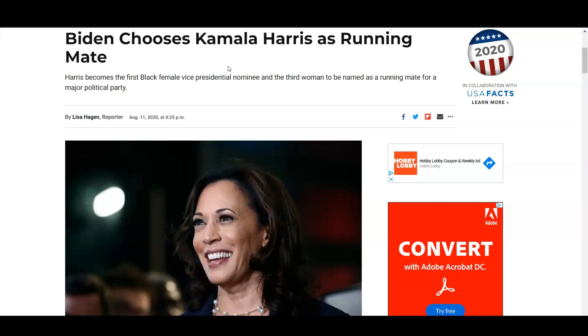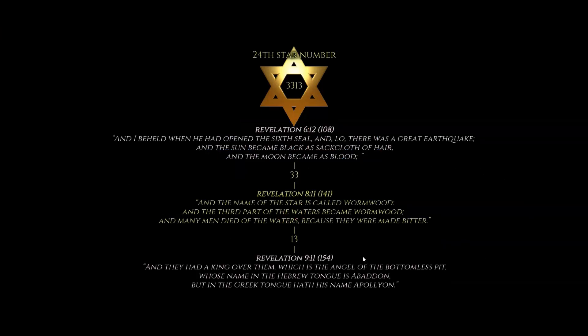Today I want to show you the Biden-Harris Democratic presidential nominee ritual for wormwood and World War. Joe Biden chose Kamala Harris as his VP running mate on 8-11-2020, and that's what my channel is all about — Revelation 8:11, the wormwood event. Also the coding of Revelation 6:12 and 9:11 that gives us our 33-13, our 24th star number. We move 33 verses from Revelation 6:12 to Revelation 8:11 and 13 more to Revelation 9:11. The great earthquake and Apollyon will be part of our wormwood event, and this 33-13 is all about Joe Biden and World War.